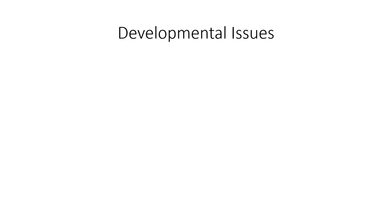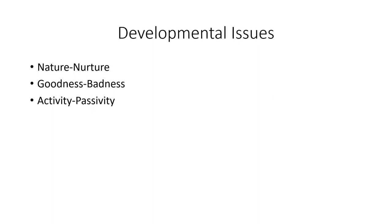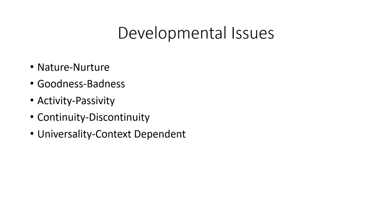Now let's look at some developmental issues — five main ones we need to consider whenever talking about development. First is nature versus nurture. Next is goodness versus badness: are people inherently good or inherently evil? Activity versus passivity: are people active in their development or just passive? Continuity versus discontinuity: is development continuous or are there abrupt breaks? And finally, universality versus context dependency: is development universal across cultures or dependent on context?